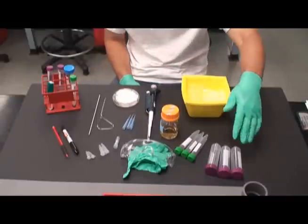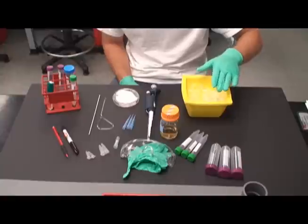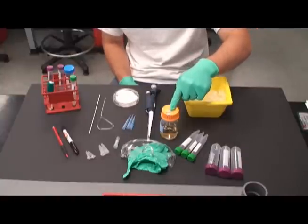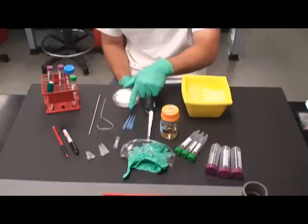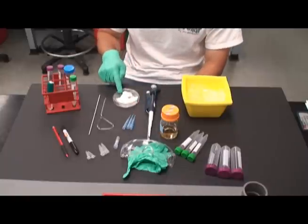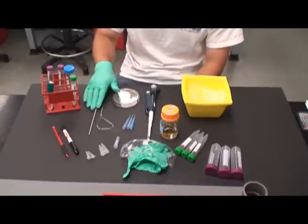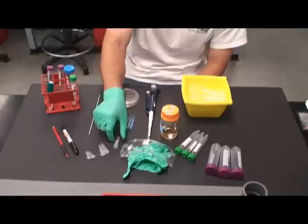You need test tubes, a bucket of ice, LB broth, micropipetter and tips, special LB and antibiotic plates, glass spreading rod and wire inoculating loop, QIA columns.